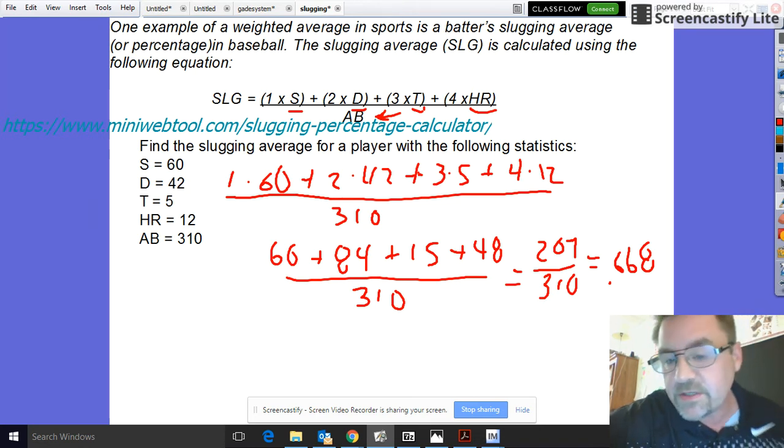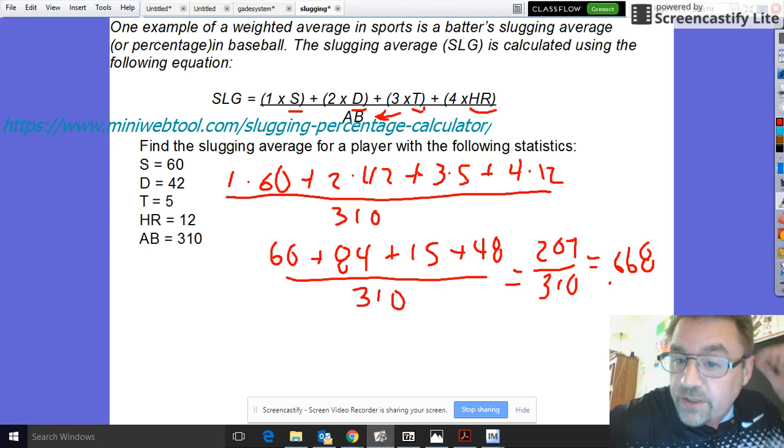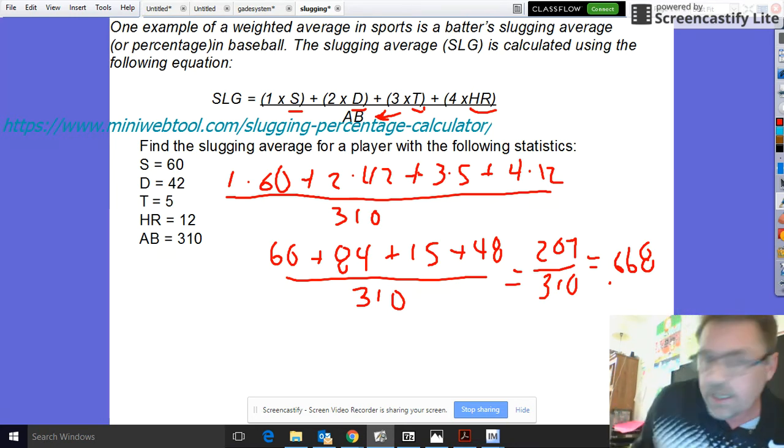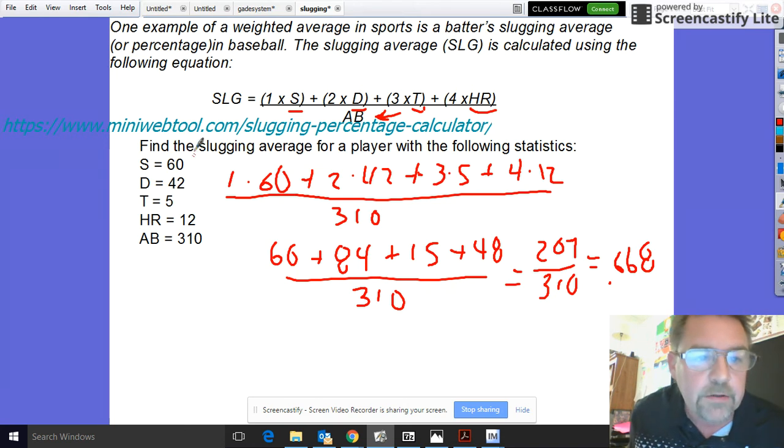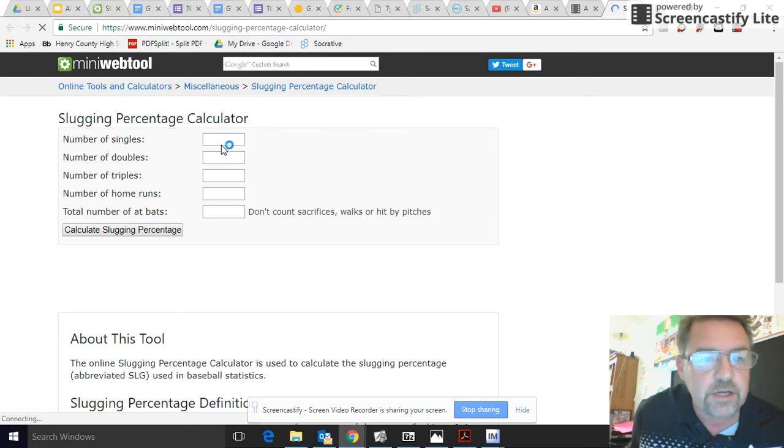What you want to do is just three decimal places for the slugging averages. Now I included a website link on the blog to where you can use this slugging average calculator to check your work.